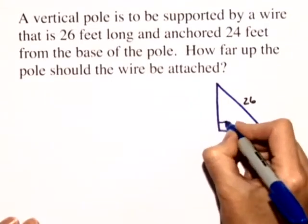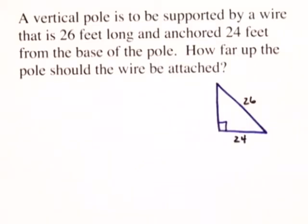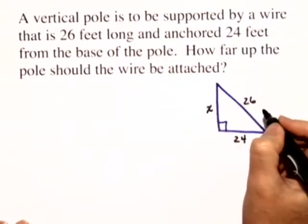This can be represented by a right triangle. Notice in this right triangle the missing piece is the vertical pole, which is X.